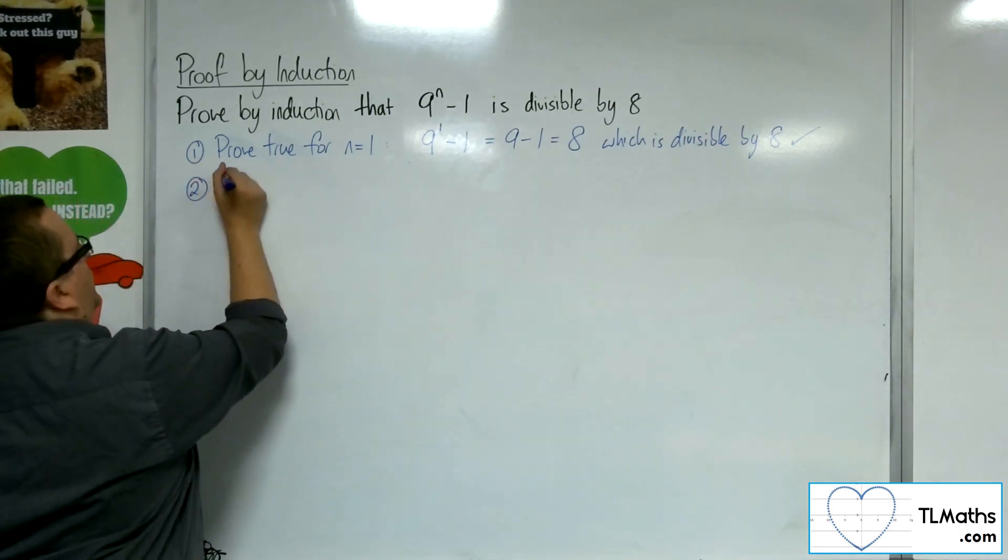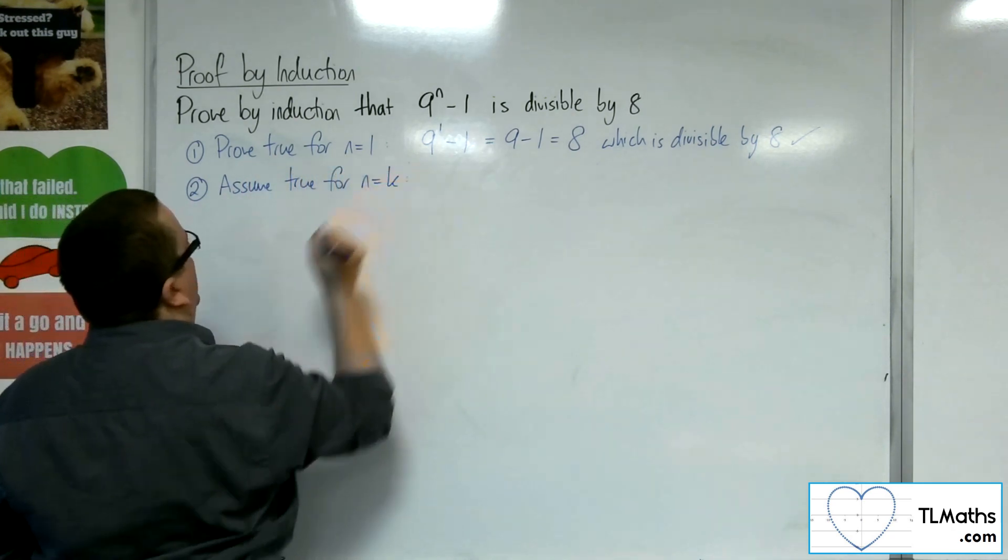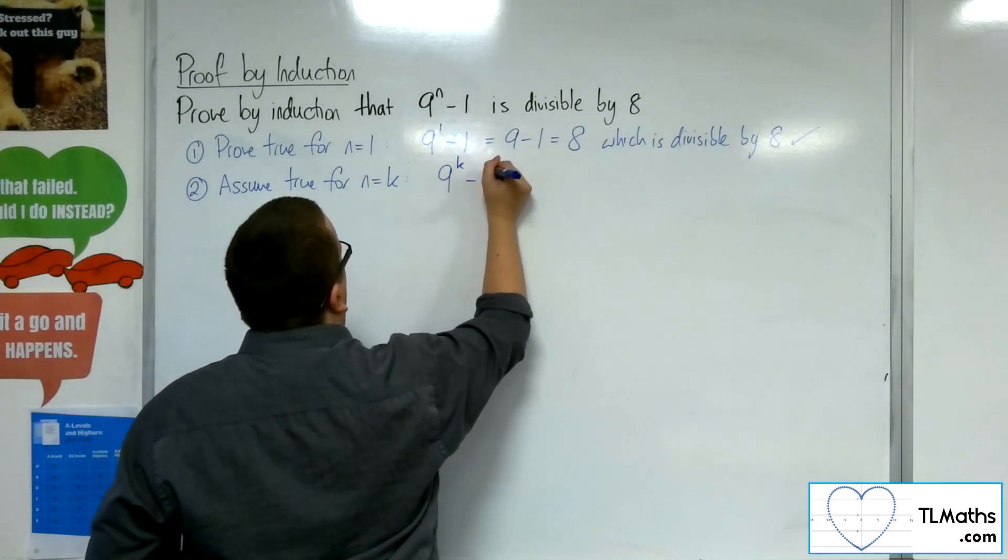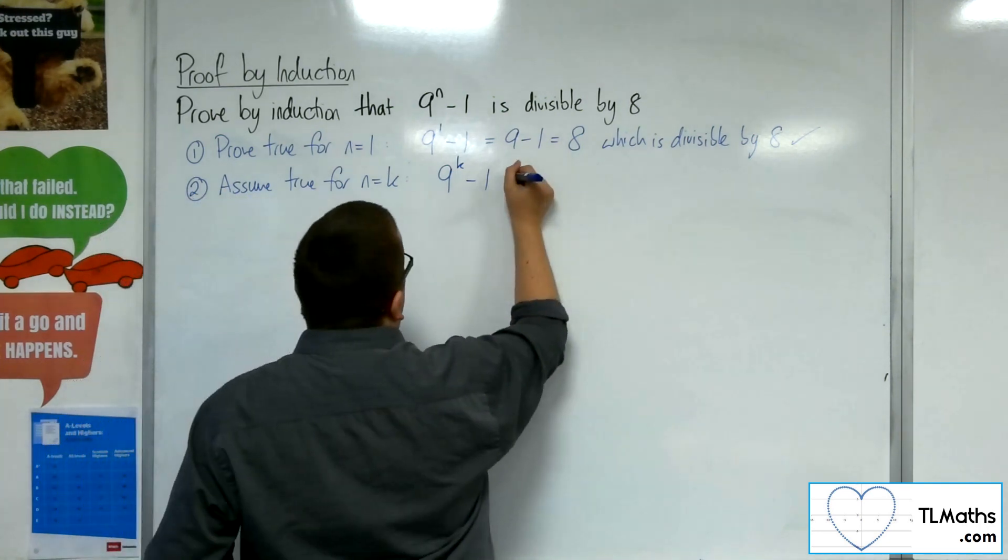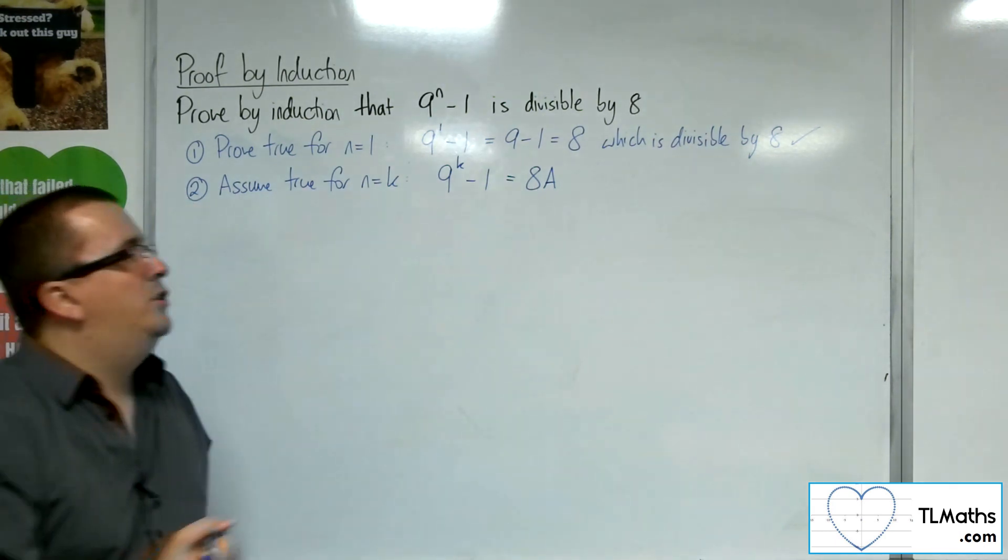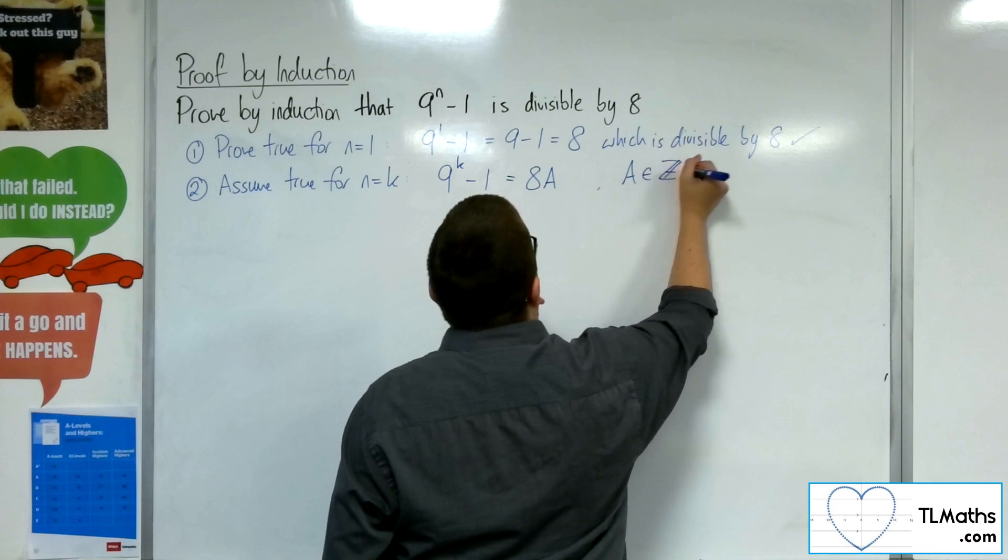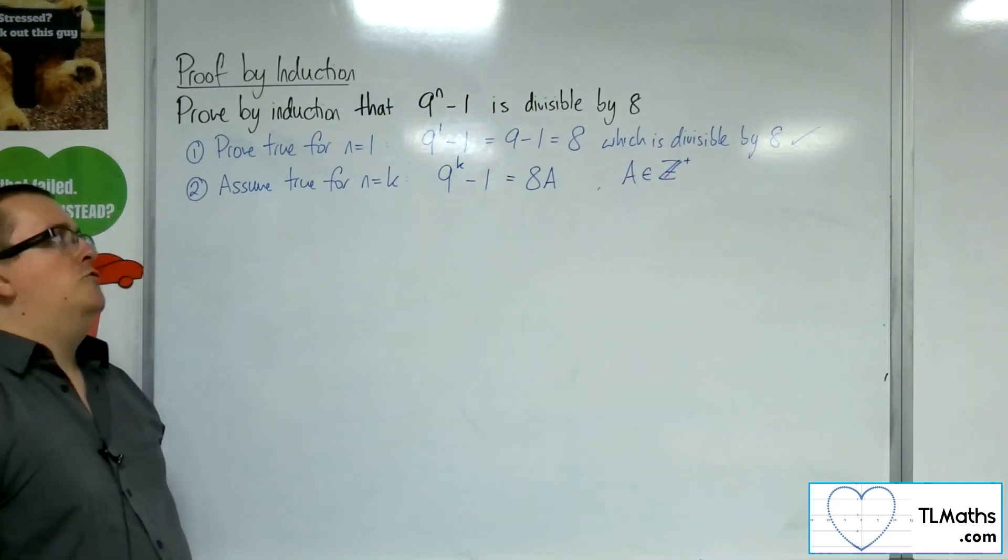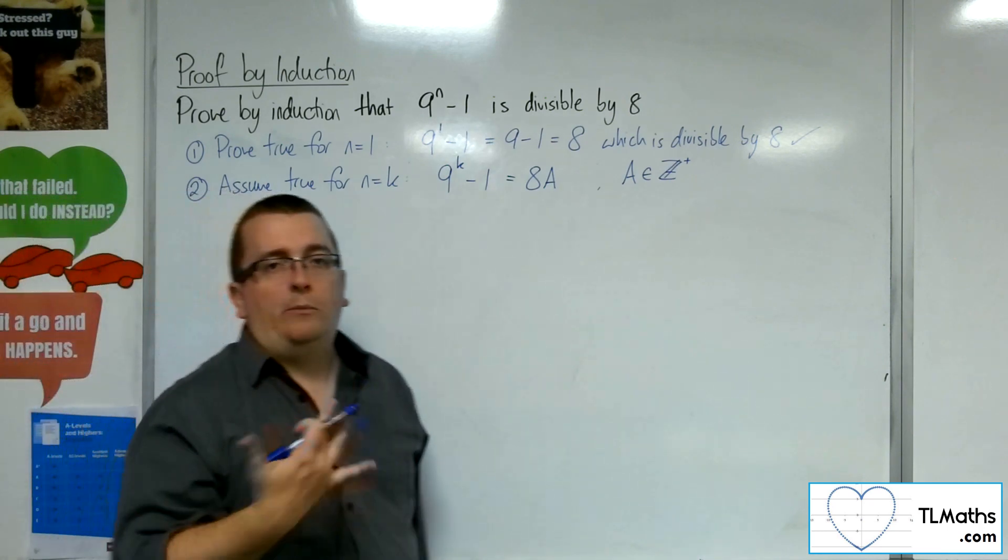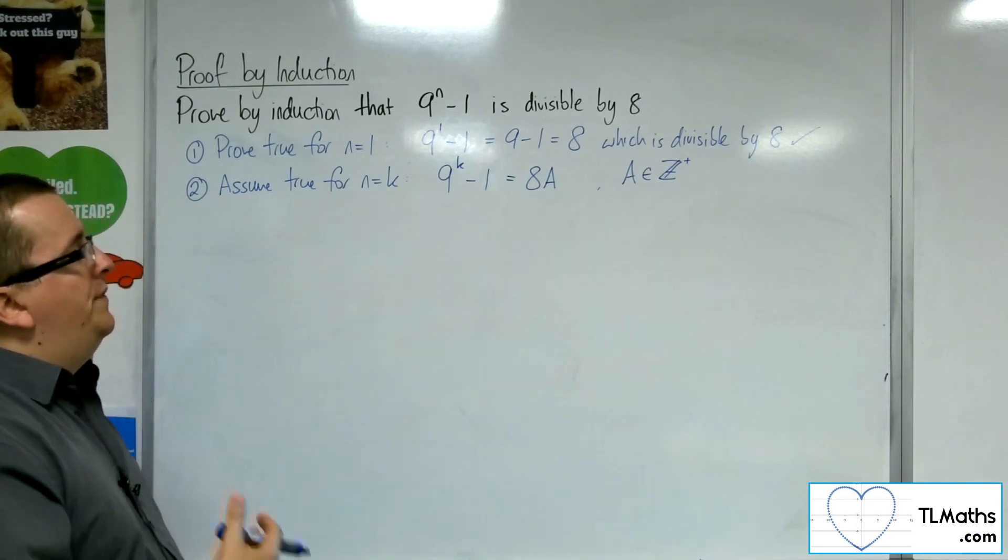Number 2, assume true for n equals k. So I replace the n with k, so I've got 9 to the k minus 1. And what I'm saying is that this is 8 times some positive integer a. So 9 to the k minus 1, in order for it to be divisible by 8, must be either 8 times 1, or 8 times 2, or 8 times 3, or 8 times 4, etc. So it must be 8 times some number a, some positive integer a.